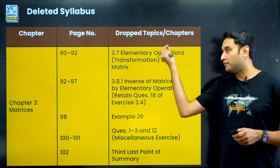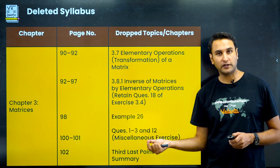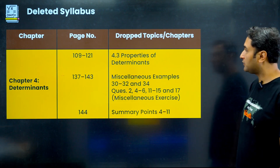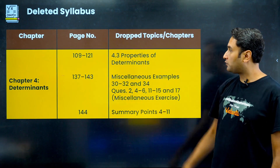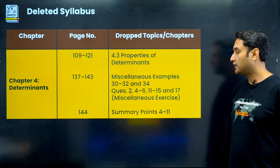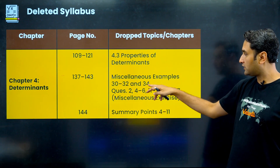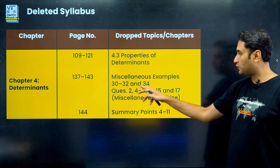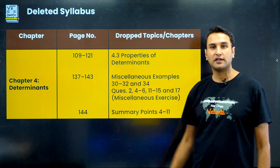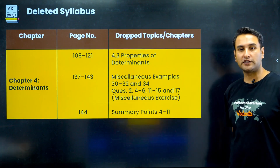The third last point in the summary of NCERT is also deleted — this portion will not come in your board exam. For determinants, article 4.3 on properties of determinants is excluded. Miscellaneous examples 32, 34, and 37 are gone, and questions 2, 4–6, 11–15, and 17 in the miscellaneous exercise are not there. On pages 137, 143, and 144, summary points 4 to 11 are excluded. I may still cover portions important for JEE.